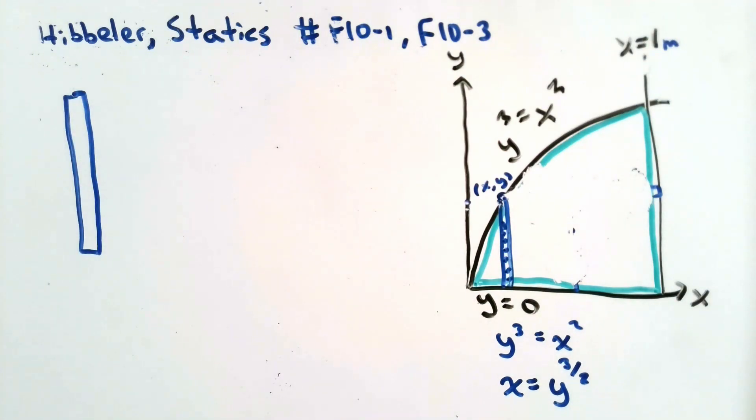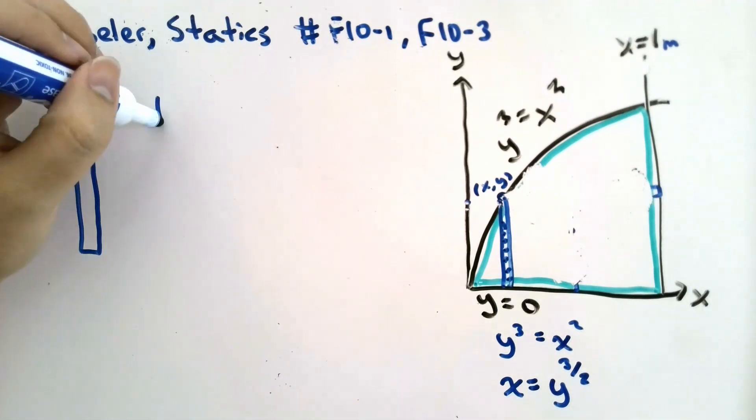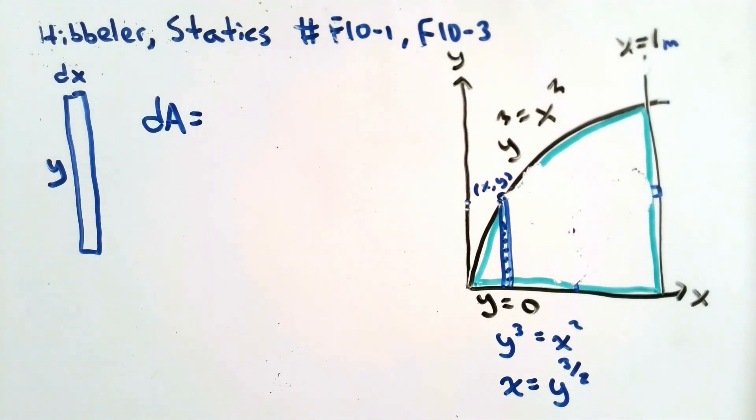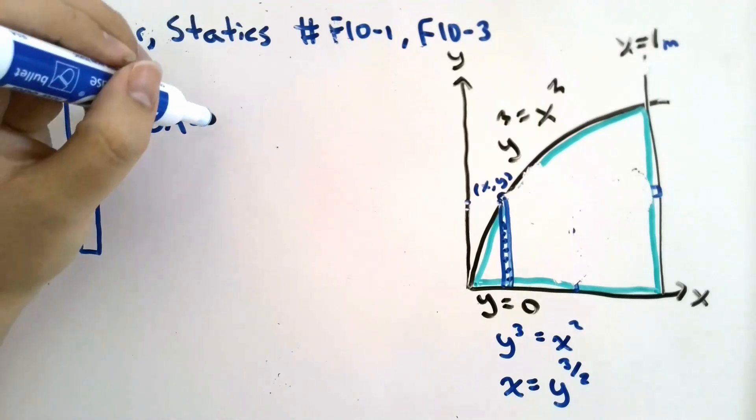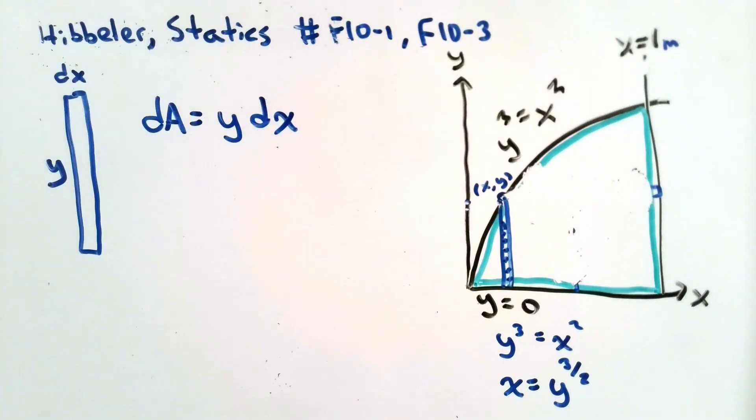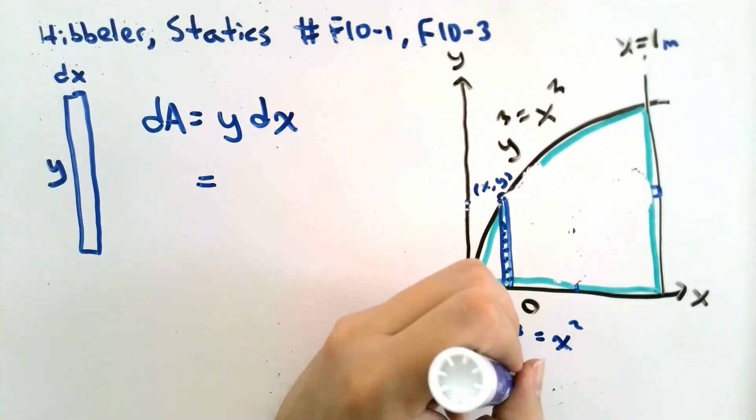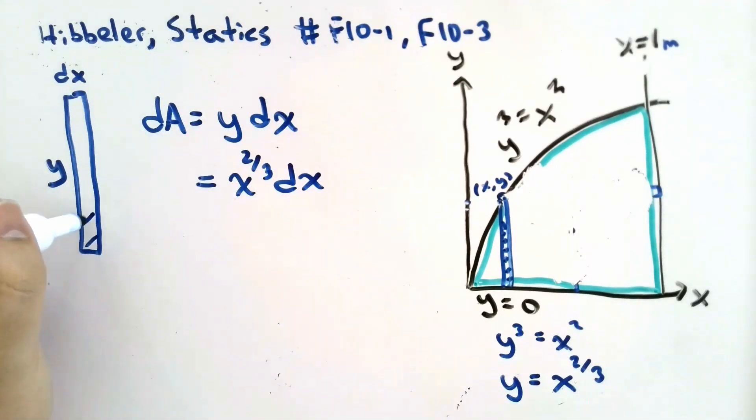This vertical element will have a base of dx and a height of y, which means that our differential area dA should be equal to y dx. And we can express y as a function of x to leave everything in terms of one variable. We know that y cubed equals x squared. Therefore, y should be equal to x to the power of 2 thirds.